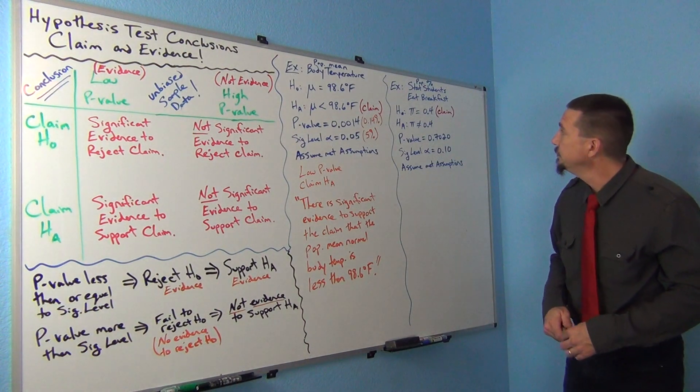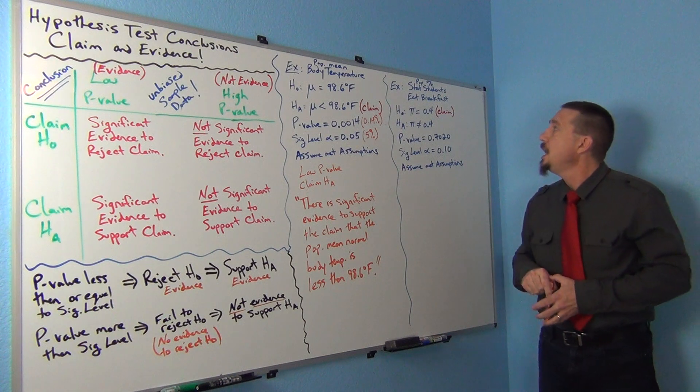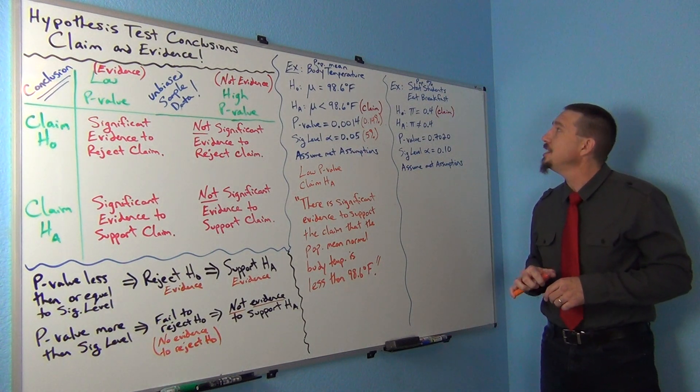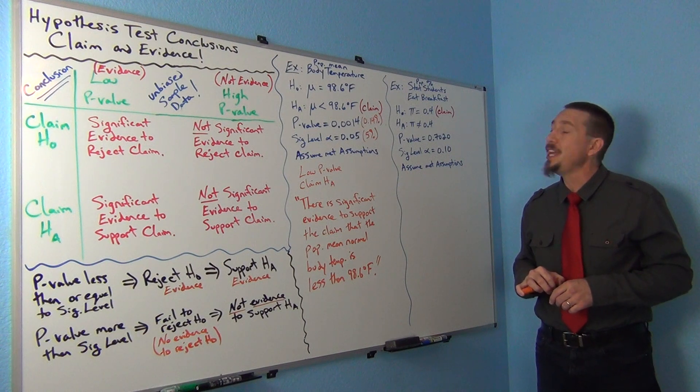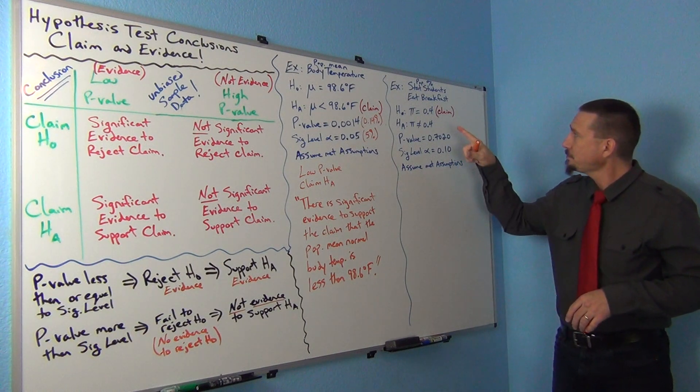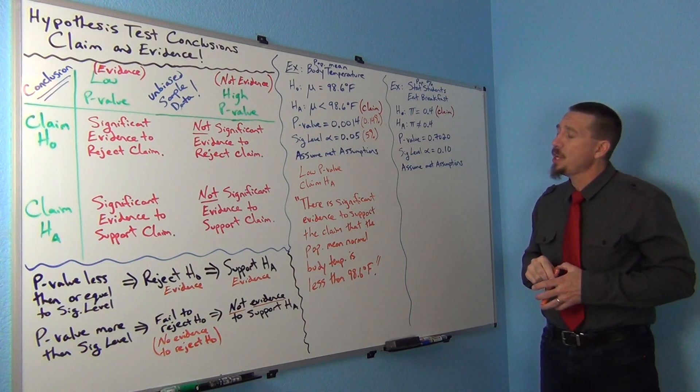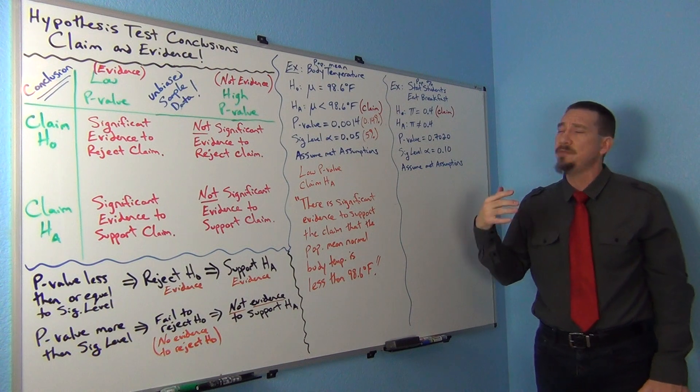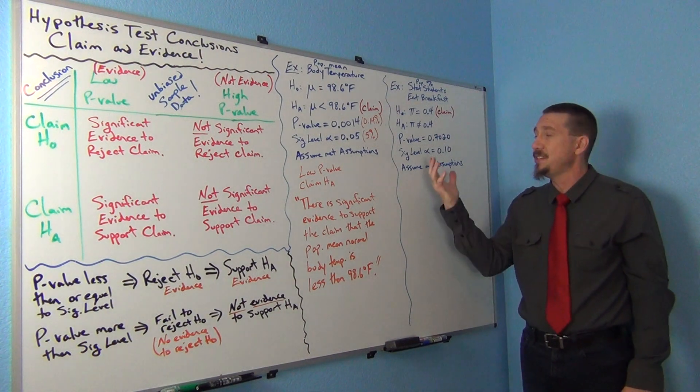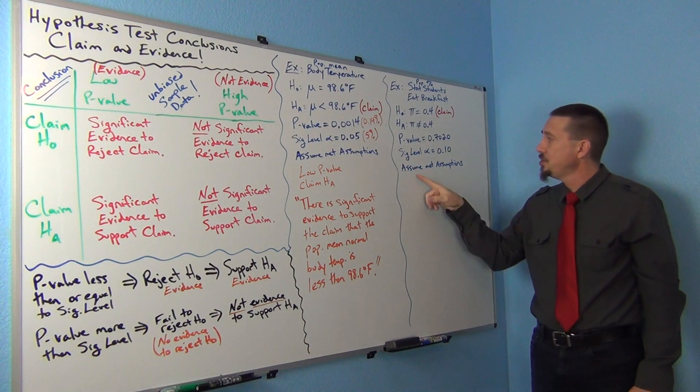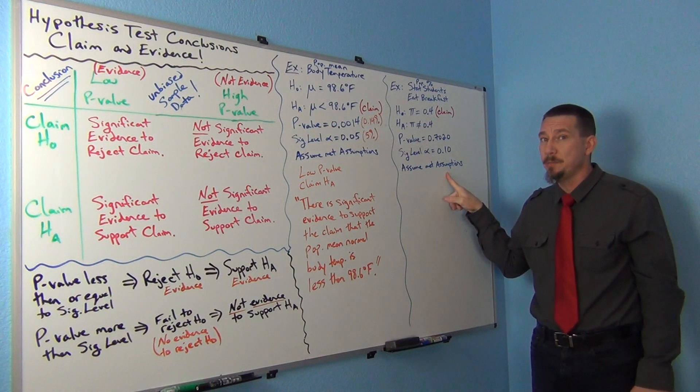All right, let's look at another example. Now I'm looking at, I was asking stat students at my college what do they eat breakfast in the morning? So I'm looking at a hypothesis test involving a population percentage of the stat students at my college that eat breakfast. Again, we're going to assume that this data met all the assumptions.